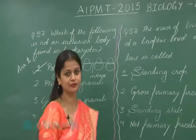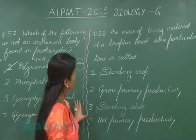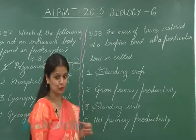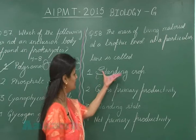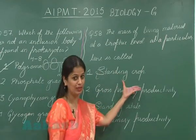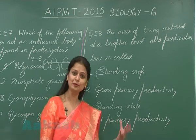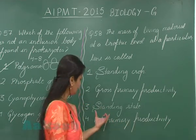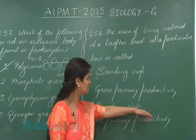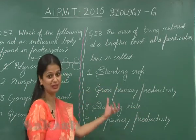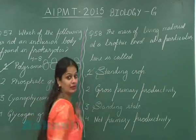Question number 58: the mass of living material at a trophic level at a particular time is called — when we talk about living material at a trophic level, this represents standing crop. If we talk about inorganic material in the abiotic environment, that represents standing state. Since this question asks about living material at a trophic level, the right answer is option number 1.